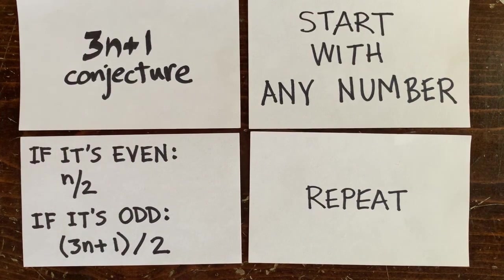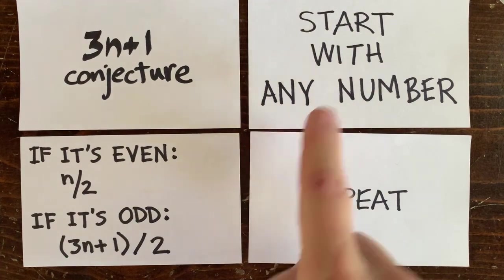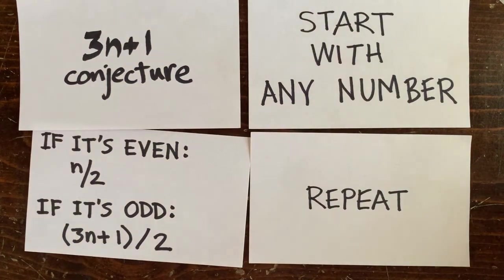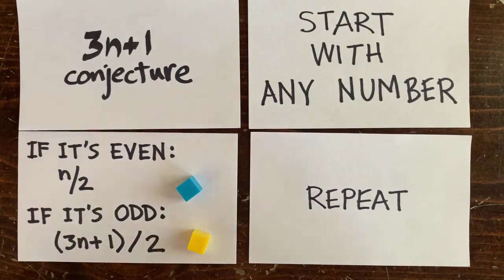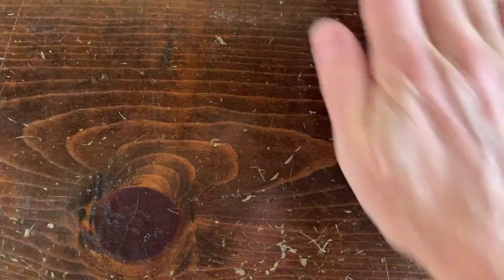Welcome back to the 3n plus 1 conjecture. Start with any number. If it's even, cut it in half. If it's odd, multiply by 3 and add 1 and divide by 2. Then repeat. Does every number go to 1? Nobody knows.